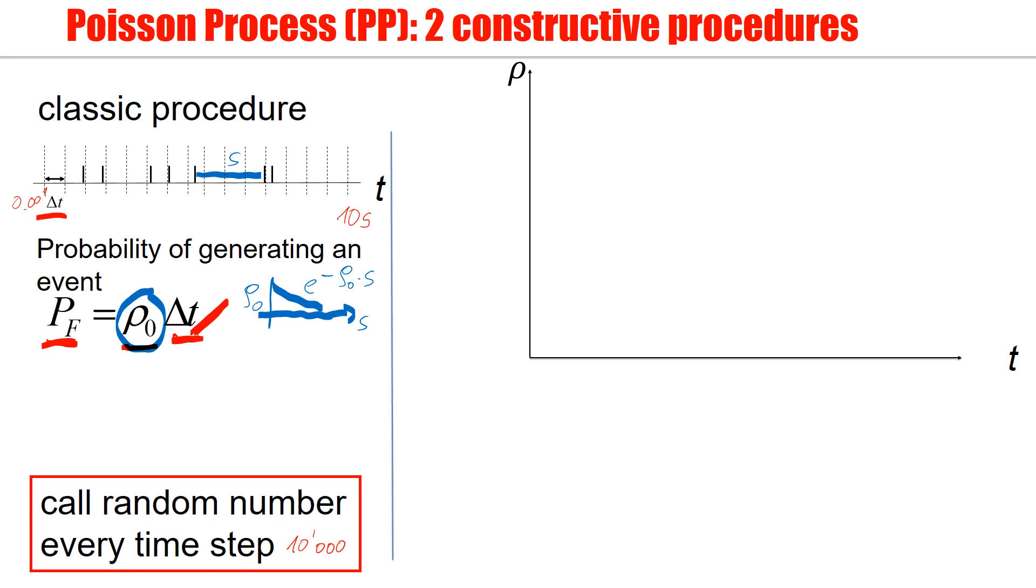So you can directly generate intervals, which you then use to go from one event to the next, and then to the next, and then to the next, to the next, and so forth. This is very efficient, because if in total you have 500 events, then you call your random number generator only 500 times. However, a constant rho_0 is kind of a boring case.